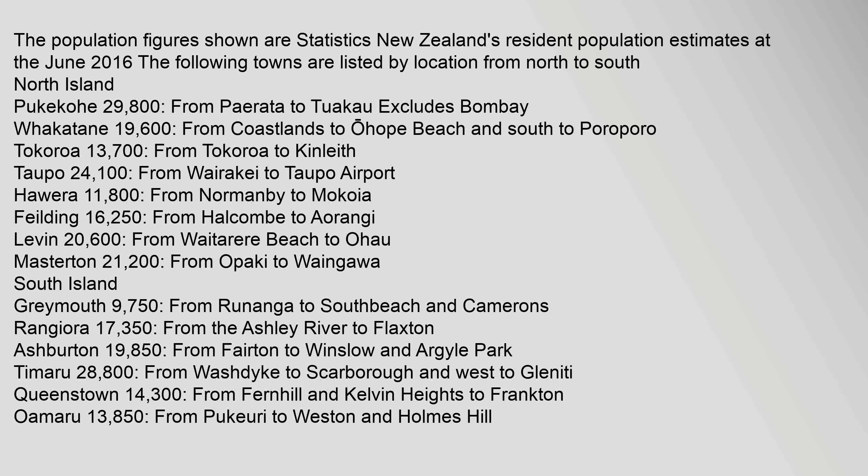South Island: Greymouth 9,750, from Runanga to South Beach and Camerons. Rangiora 17,350, from the Ashley River to Flaxton. Ashburton 19,850, from Fairton to Winslow and Argyle Park. Timaru 28,800, from Washdyke to Scarborough and west to Glaniti. Queenstown 14,300, from Fernhill and Kelvin Heights to Frankton. Oamaru 13,850, from Pukeuri to Weston and Holmes Hill.